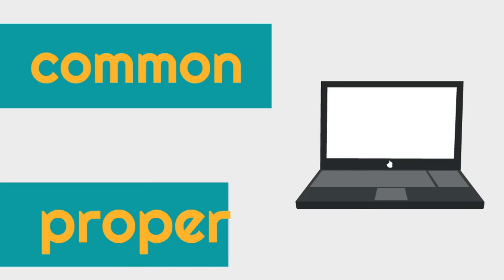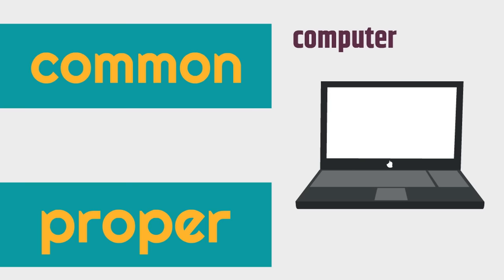Let's try this one. What is this? What would be the common noun? Computer. Computer would be the common noun. Now, let's say this specific computer is a Platinum 10. That means the proper noun for this would be Platinum 10. The common noun is the type of person, place, or thing, which is a computer. And the proper noun is the specific one, which is the Platinum 10.